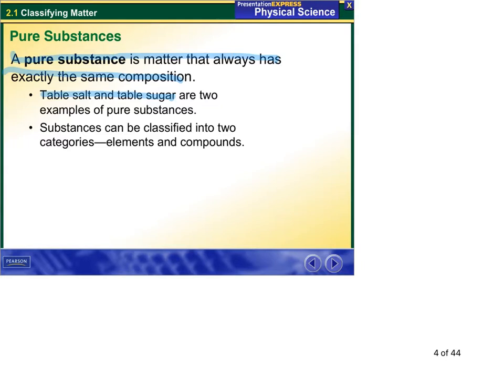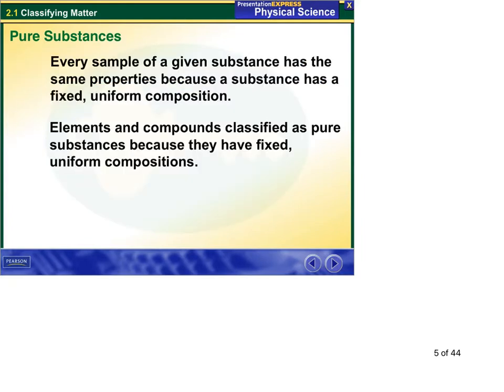Pure substances are broken down into two categories, elements and compounds. Every sample of a given substance, and in chemistry when they say substance or pure substance, we're talking about exactly the same thing. So every sample of a given substance has the same properties because a substance has a fixed uniform composition.